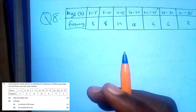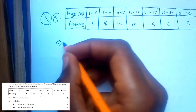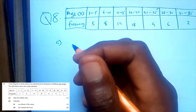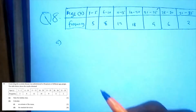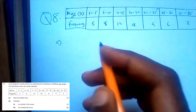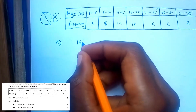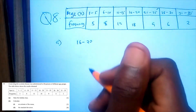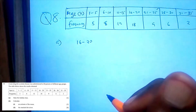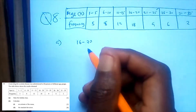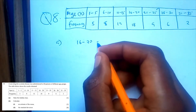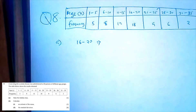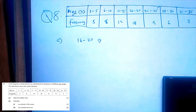Question 8a: find the modal class. The modal class is the class with the highest frequency, which is 16 to 20. You can find its midpoint: (16 + 20) / 2 = 18. So 18 is our modal class midpoint.